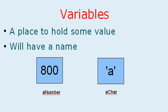Today we are going to discuss about variables. Variables are a place where you can hold some value within Java. To take an example, it's like a box where you can put something inside and label that box with a name. Variables are similar to that.